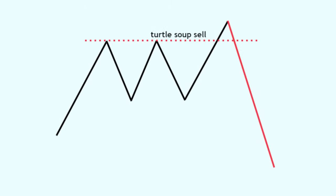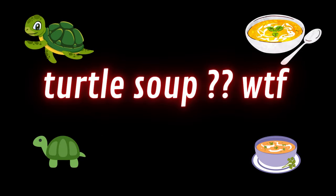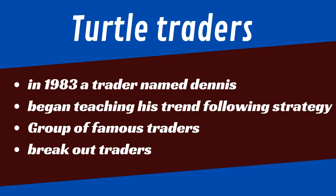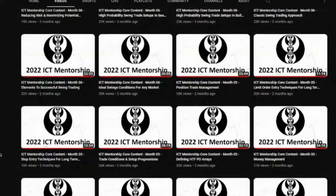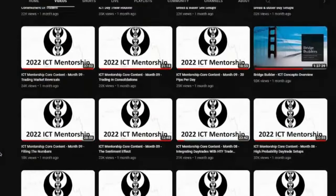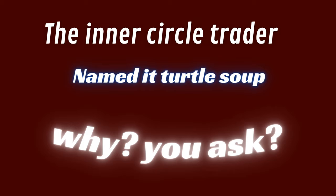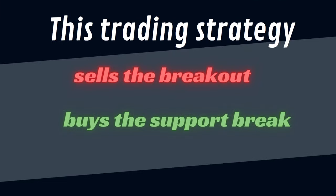ICT's favorite trading strategy is the turtle soup. Back in 1983, a trader named Dennis began teaching his trend-following strategy to a now-famous group called the turtle traders. They are breakout traders — they buy when a new high is made and go short on a new low. ICT got the name originally from Linda Raschke but put his own spin on it.